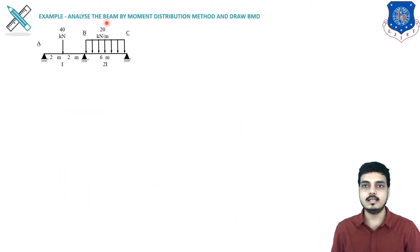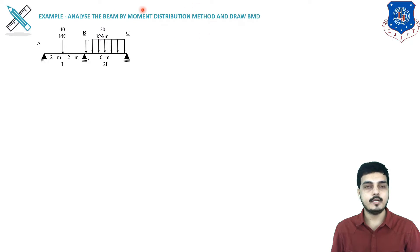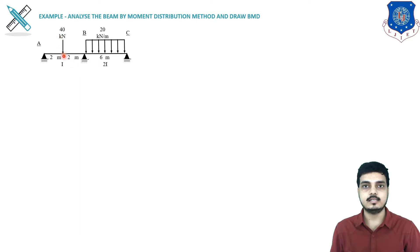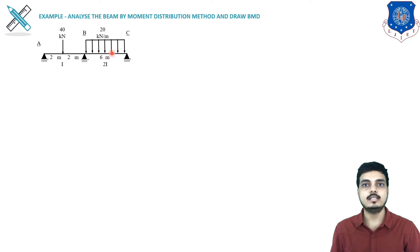We have to analyze the beam by the moment distribution method and draw the bending moment diagram. A diagram is given in which A, B, and C supports are simple pin supports. For the AB span it is 4 meters, having single I, with a central point load of 40 kN. For the BC span, a UDL of 20 kN per meter over a length of 6 meters is given, with 2I.